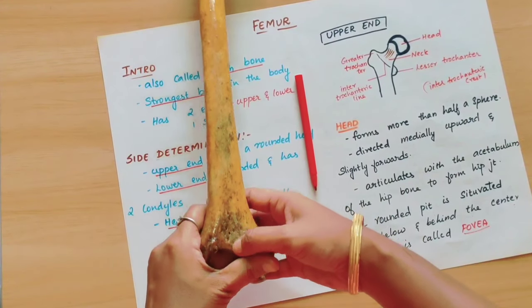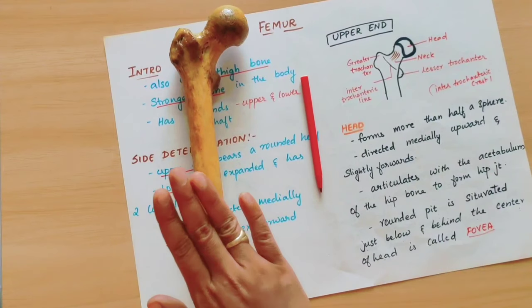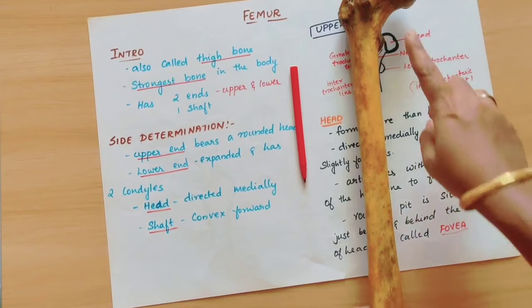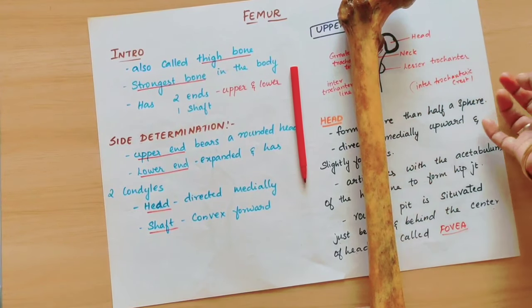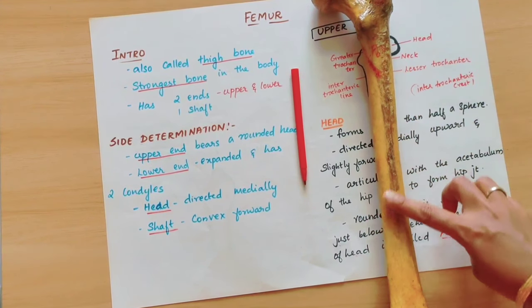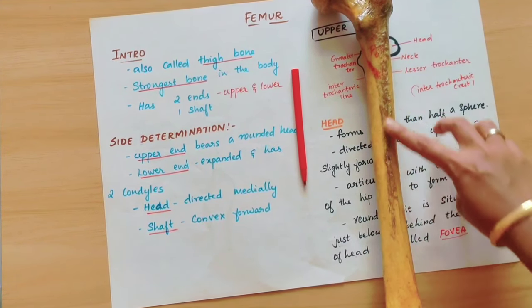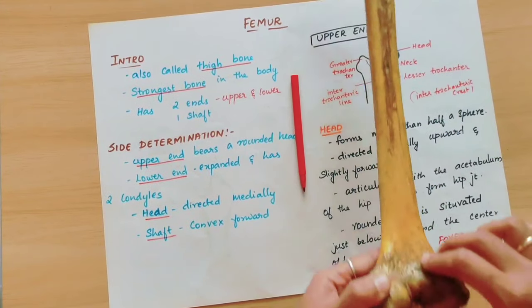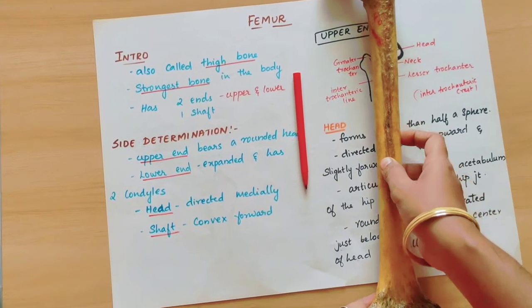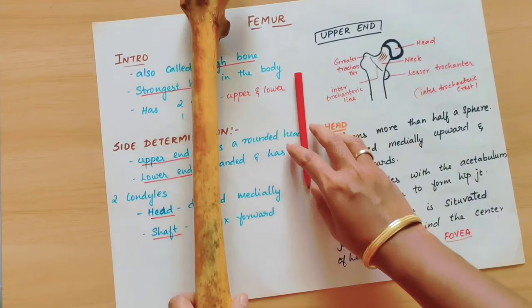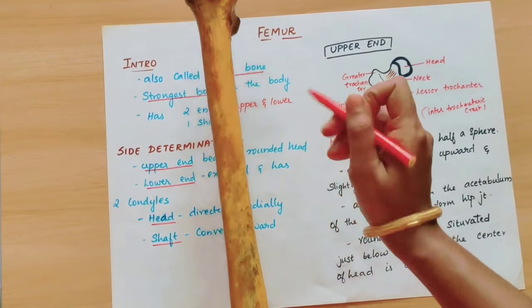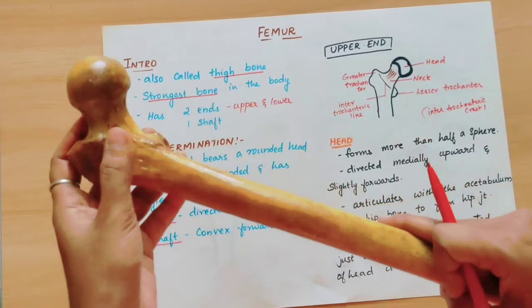It is correctly fitting into the right side. This bone belongs to the right side of the body. We can conclude that this is the right side bone.